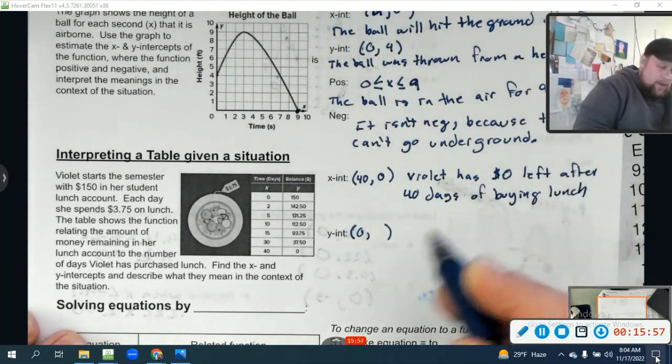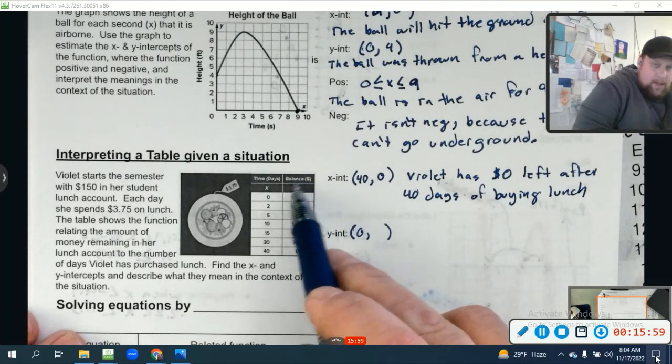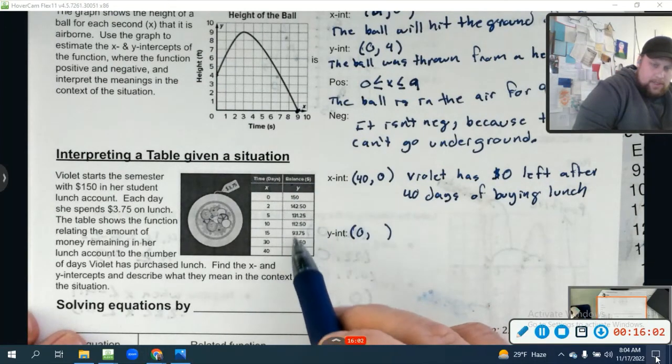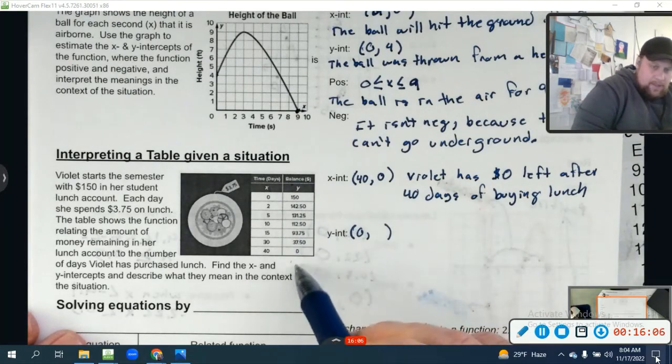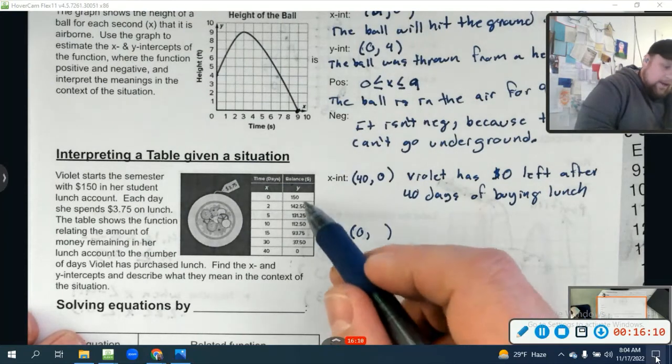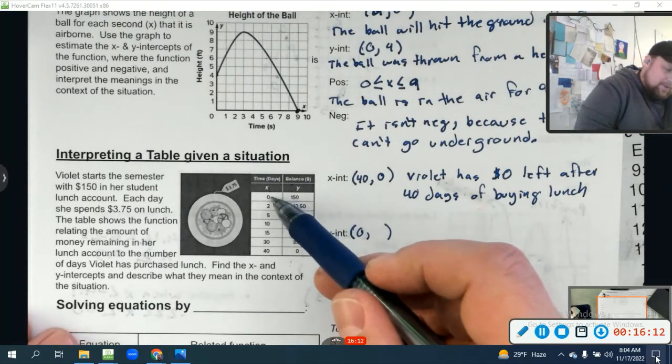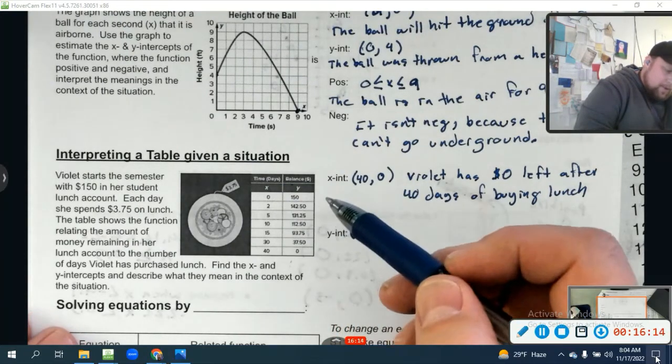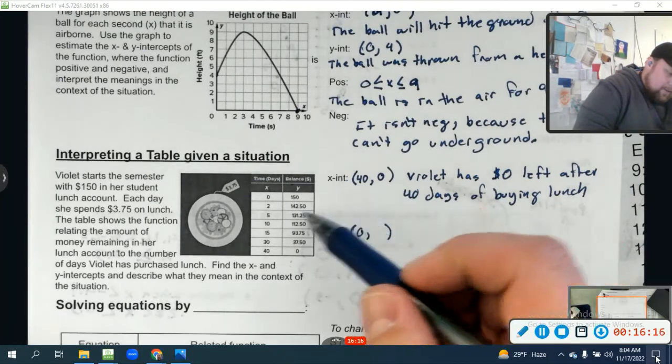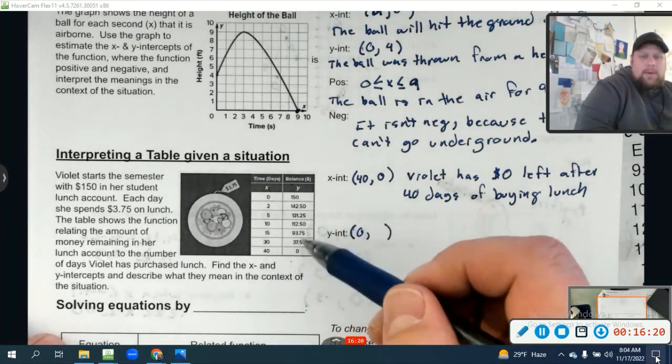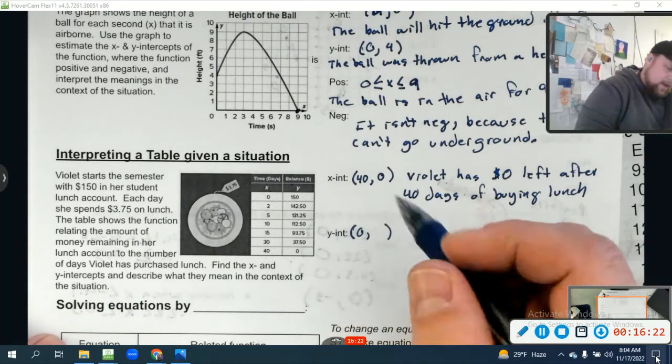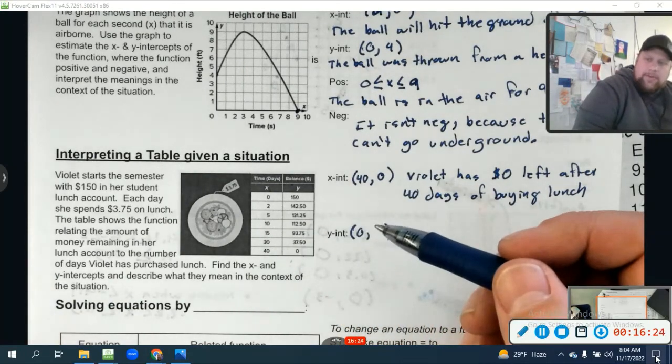How do I know that? Well it says this is her balance in her account. If her balance is zero, that means every day she spends money we see it going down $3.75 every single day. This one's going down by two days, so that would be like $7.50. This one's three days, so it's going down by more, but it's essentially going down $3.75 a day until she hits zero after 40 days.